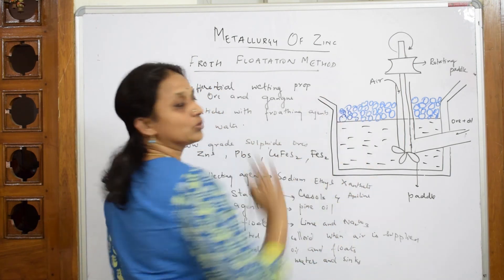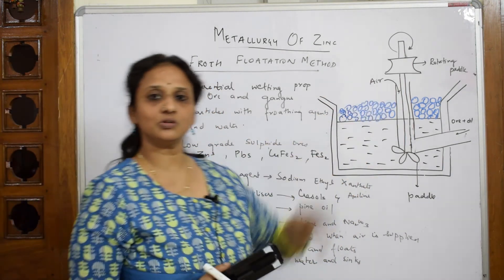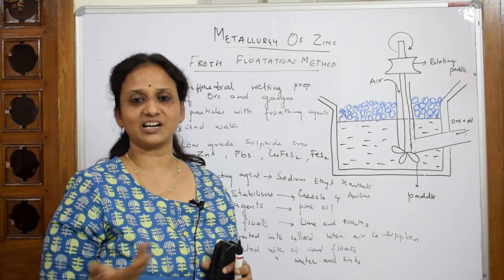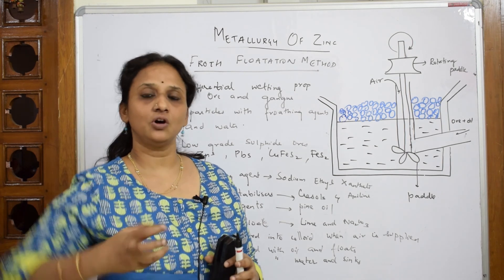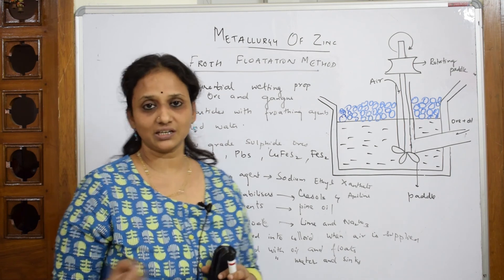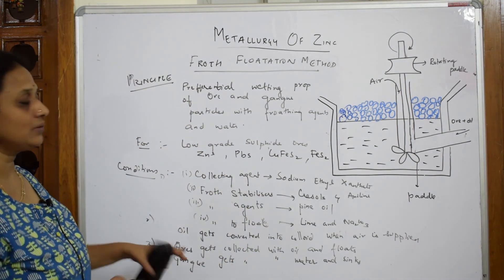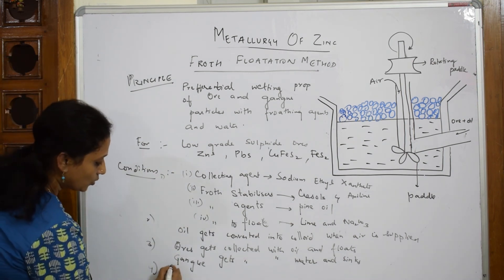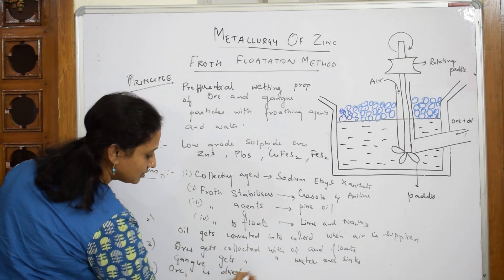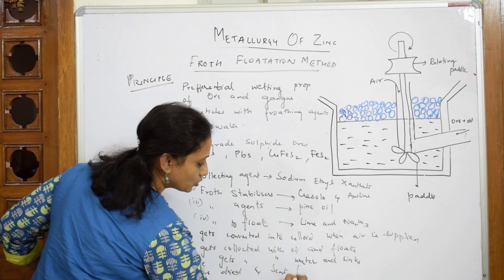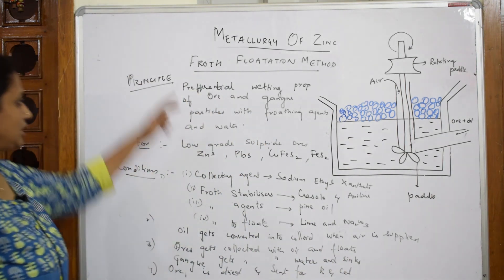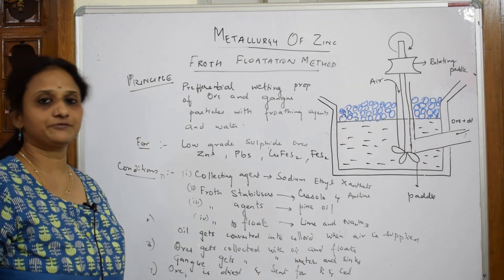The gangue is at the bottom and the ore is floating above. Now they collect this ore, dry it completely, and once dried, this concentrated ore is further sent for roasting and calcination. So the final step is: ore is dried and sent for roasting and calcination. This completes the froth flotation method. Your complete answer from this covers the full topic and this is where you can get full marks.